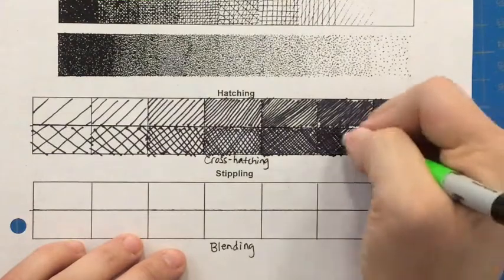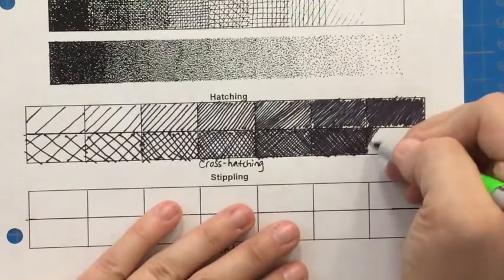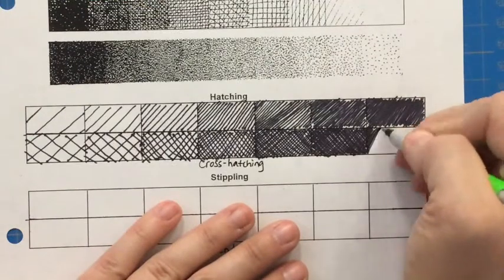As you get to your darker values it's okay if your lines start to overlap a little bit. For the very last one you want them to be very close together.